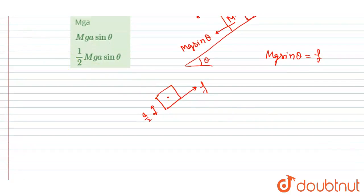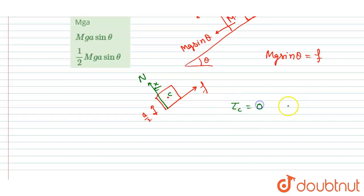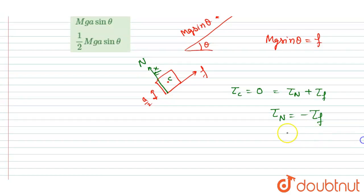Since the question asks about the normal reaction torque, the normal reaction must act at some perpendicular distance x from the center so that its torque can balance the torque due to friction. Taking torques about the center point c: torque about c equals zero, which gives torque due to normal reaction plus torque due to friction equals zero. Therefore, the torque due to the normal reaction equals the negative of the torque due to friction.